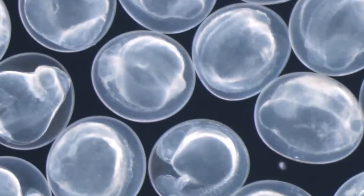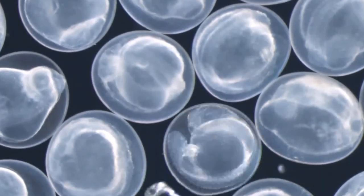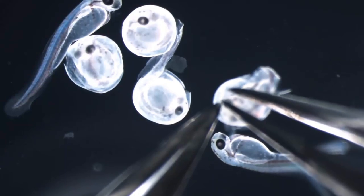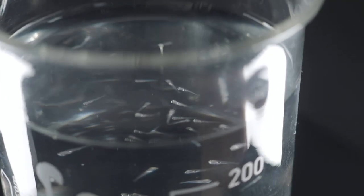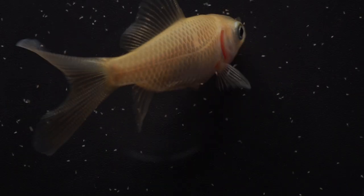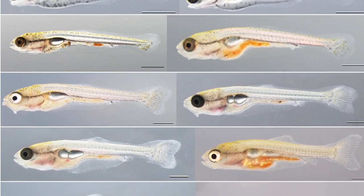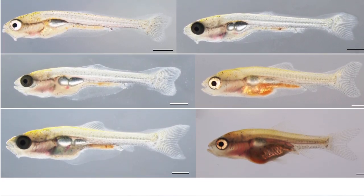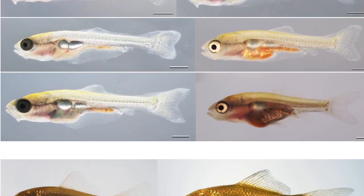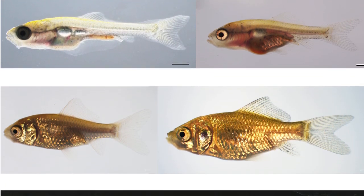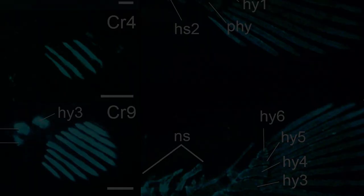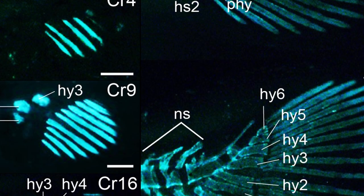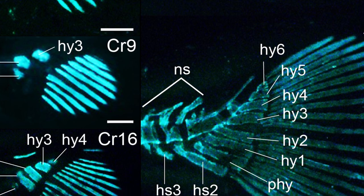In the previous video, we discussed how to observe embryos before they hatch. This time we will explain how to observe the larvae and juveniles after they hatch. Previously we briefly explained the developmental stages of larvae and juveniles after hatching, showing that each part of goldfish develops in a specific order.